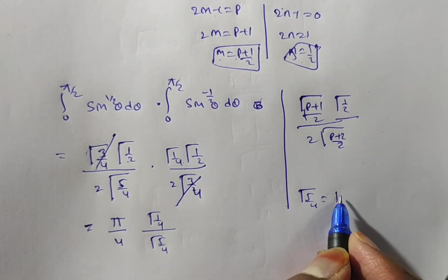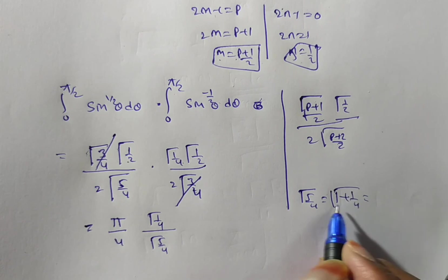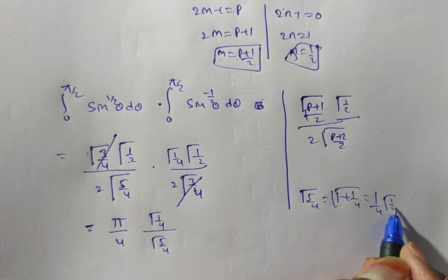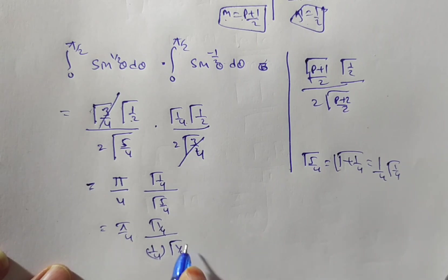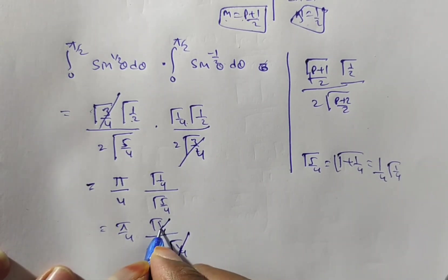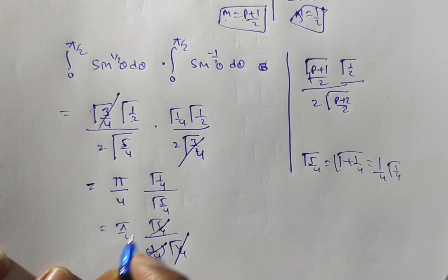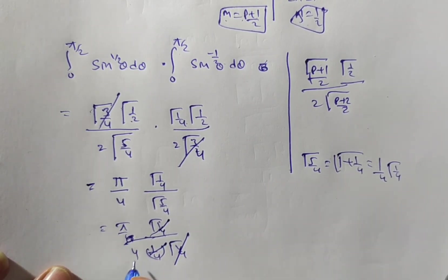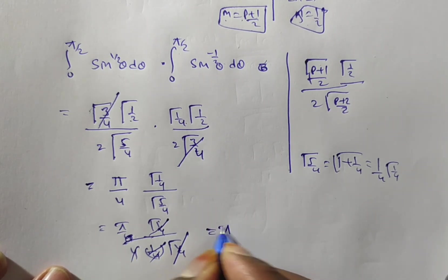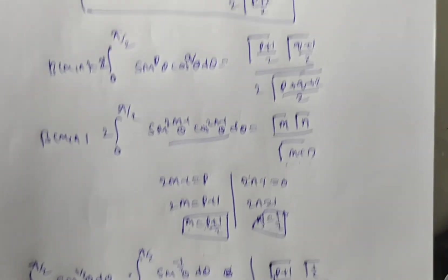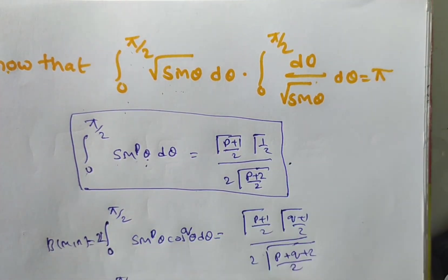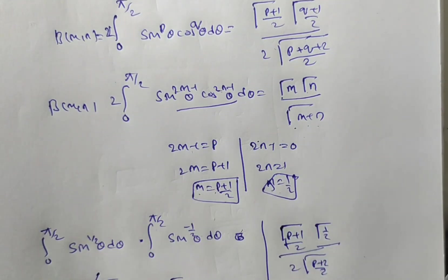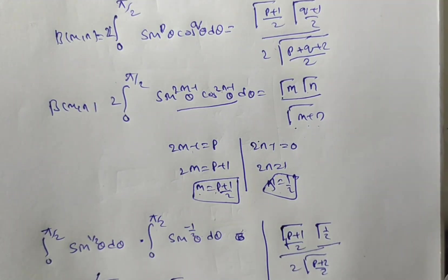After simplification, the 1/4 factors in numerator and denominator also cancel, leaving the final answer of π. This is exactly what we had to prove. To summarize: remember the formula for ∫₀^{π/2} sin^p(θ) dθ, which you can derive using the beta-gamma relation. Is it clear for everyone? Thank you for watching this video.